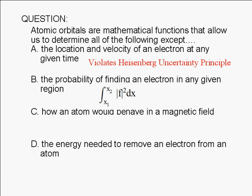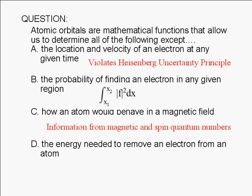Atomic orbitals have terms that give us information about properties of the atom. For example, the magnetic quantum number and the spin quantum number allow us to explain the behavior of atoms in the presence of a magnet.